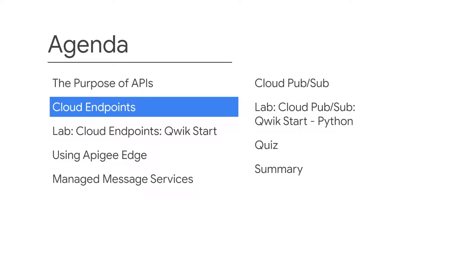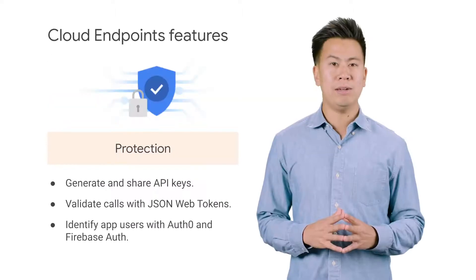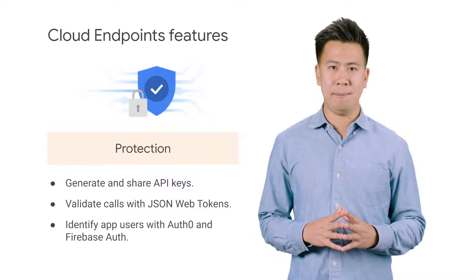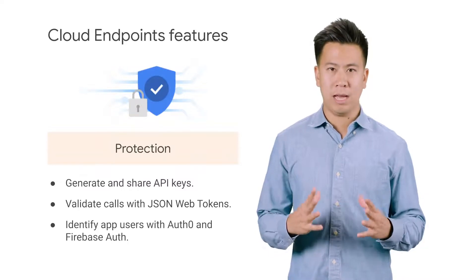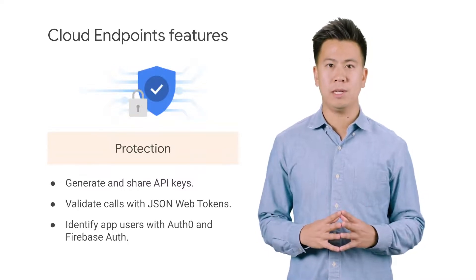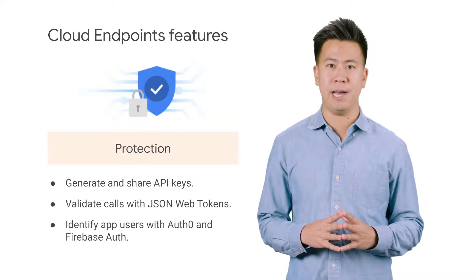In this topic, you'll explore Cloud Endpoints, a way to develop, deploy, and manage APIs on any Google Cloud backend. Cloud Endpoints is a distributed API management system. With Cloud Endpoints, you can control who has access to your API.